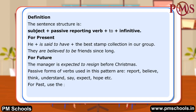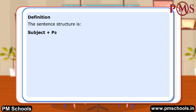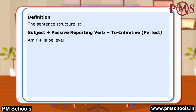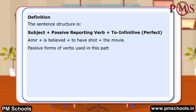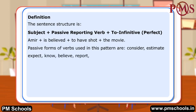For past, use the perfect infinitive — to have been, to have seen, to have done. The sentence structure is: subject plus passive reporting verb plus perfect infinitive. Example: Aamir is believed to have shot the movie. Passive forms of verbs used in this pattern include: consider, estimate, expect, know, believe, report, say, think, understand, and to be rumoured.